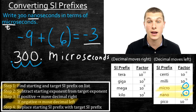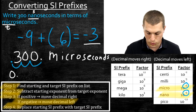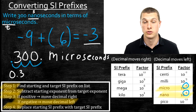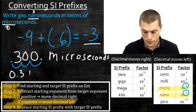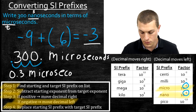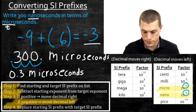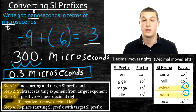We can write that in a more cleaned-up fashion: 0.3. We drop those trailing zeros since they don't change the number, and write our unit as microseconds. So 0.3 microseconds is the same amount of time as 300 nanoseconds.